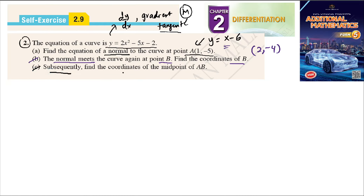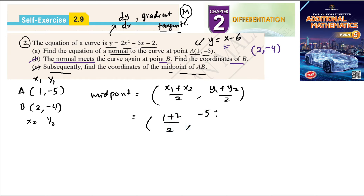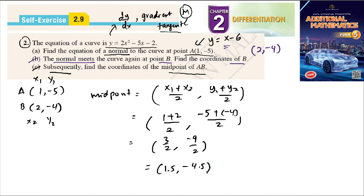Part C: find the coordinates of the midpoint of AB. We have A(1, -5) and B(2, -4). Using the midpoint formula: x = (x1 + x2)/2 = (1 + 2)/2 = 3/2, and y = (y1 + y2)/2 = (-5 + (-4))/2 = -9/2. So the midpoint is (1.5, -4.5), or equivalently (3/2, -9/2).